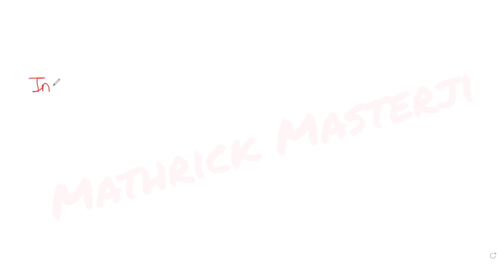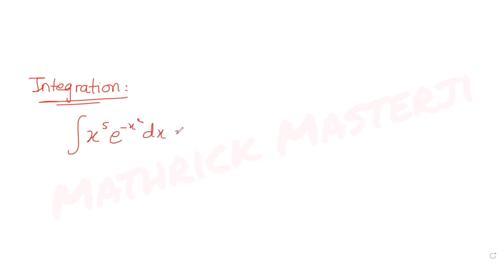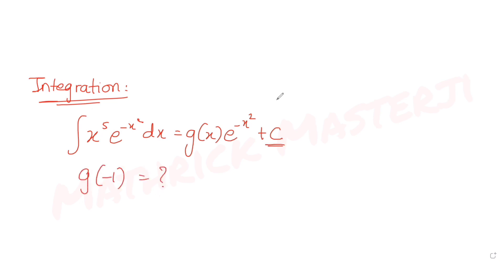Hi guys, I hope you are all doing well. Today's question is from the topic of integration. The question tells us that if the integral of x raised to 5 times e raised to minus x square dx is g(x) times e raised to minus x square plus c, where c is the constant of integration, then we have been asked to find g of minus 1.